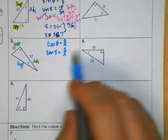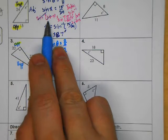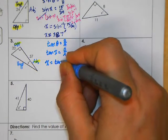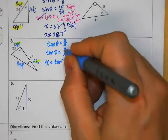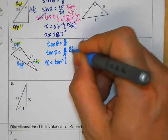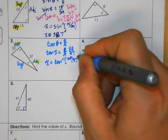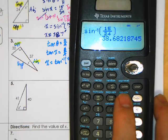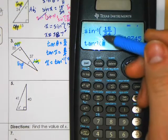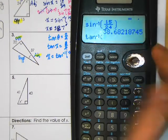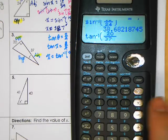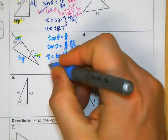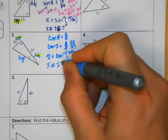Now I take the inverse tangent of both sides. Rather than writing it all out, I'll simply say X equals the inverse tangent of 20 over 37. Type it into your calculator: hit the tangent button twice to get tangent inverse, then enter the ratio 20 to 37. In this case I get a measurement of 28.4 degrees. So X is approximately equal to 28.4 degrees.